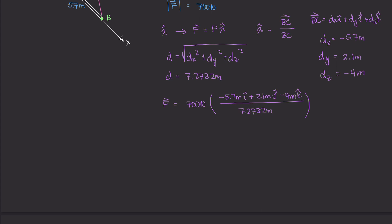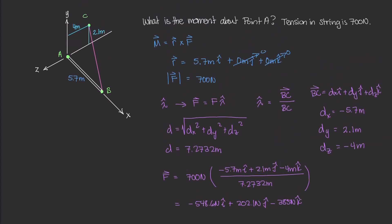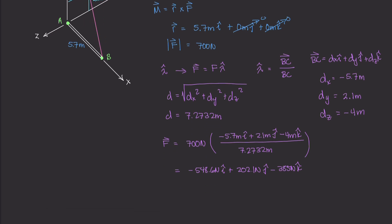If we break this up into the i, j and k components, we get a value of negative 548.6 newtons in the i direction. And then we have plus 202.1 newtons in the j direction. And then finally, minus 385 newtons in the k direction. So this is our force vector, this is our tension that is acting within this rope. Remember, this is three dimensional, so we're going to have three different components for this F vector.